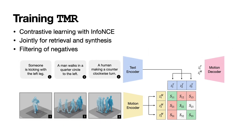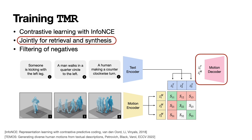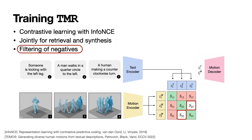TMR has three key components. First, we use a recent contrastive learning loss based on the InfoNCE formulation. Second, in addition to the two encoders, our model contains a decoder which is jointly trained to generate 3D human motions. The model architecture is based on the TEMOS motion synthesis framework. Third, we notice that there exist very similar motion descriptions in the training data. To avoid setting them as negatives, we remove such pairs from the loss.